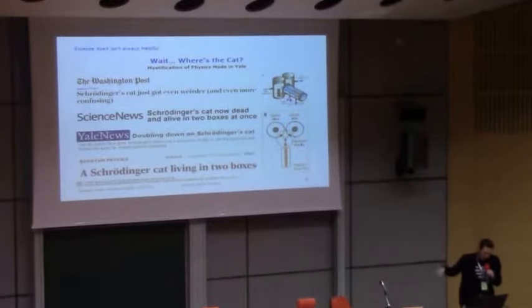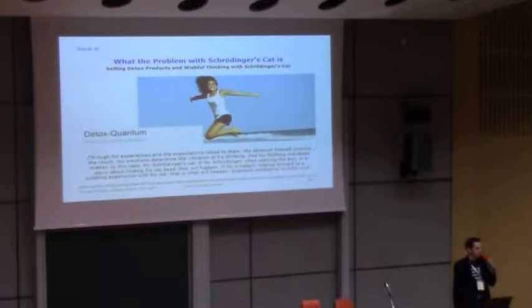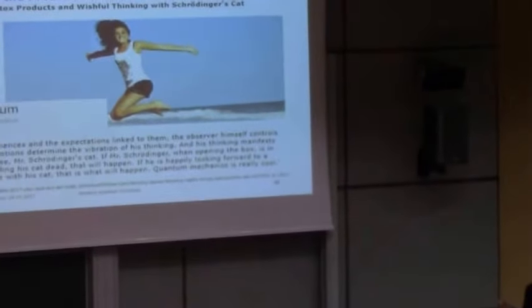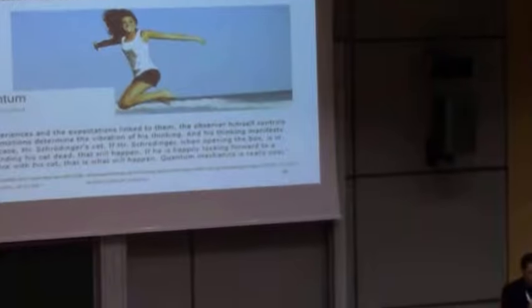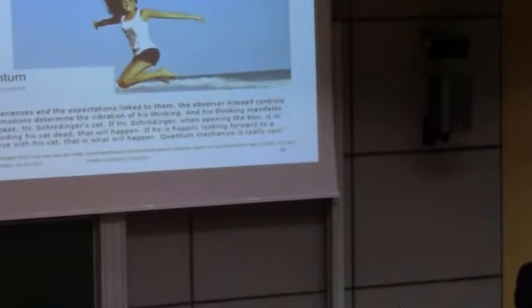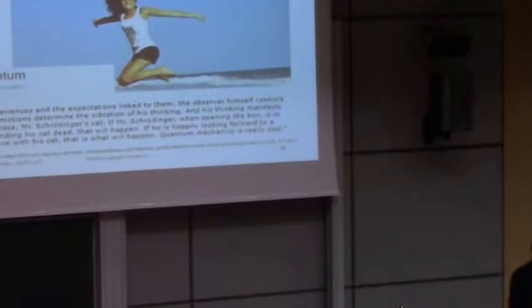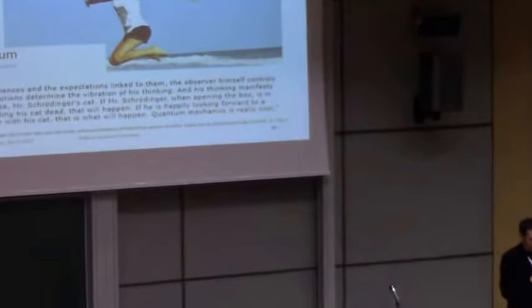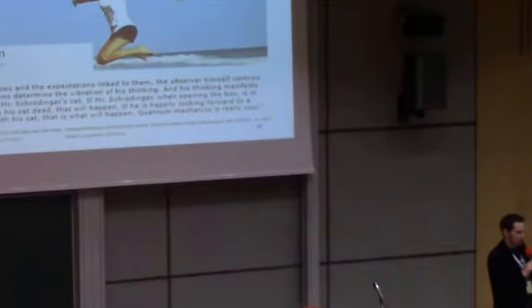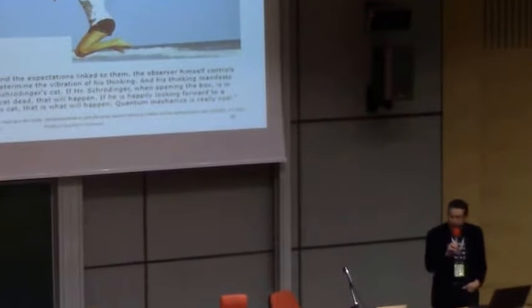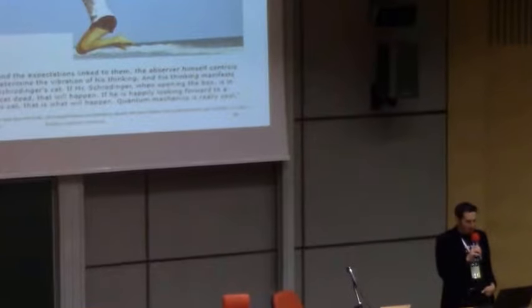And, if you're wondering why I keep picking on Schrödinger's cat, well, let's look at some of the quantum woo out there. And, let's look at a German blog that's called Detox Quantum. And, I probably don't have to tell you what the lady running this blog normally sells. And, she's on her blog, she's written an article, I think that was from the beginning of 2017, on Schrödinger's cat. And she writes the following. Through his experiences and expectations linked to them, the observer himself controls the result of a motion, a typical red flag. His emotions determine the vibration of his thinking, and his thinking manifests matter. In this case, Mr. Schrödinger's cat.